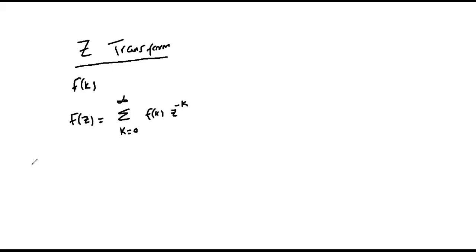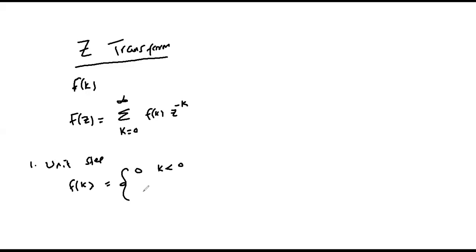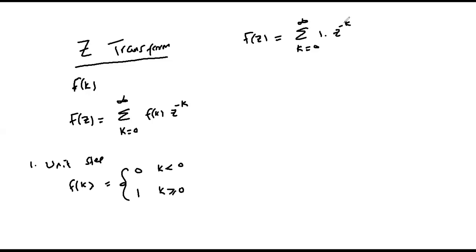Let's illustrate this with certain examples. Example one: a unit step function defined by f of k. This is a function that has values of zero for k less than zero, and values of one for all values greater than or equal to zero. The Z-transform F of z will be obtained by the summation from k equals zero to infinity of f of k, which is one, multiplied by z to the power minus k.